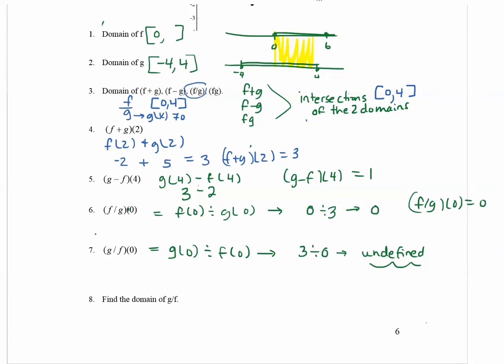Okay, now let's find the domain of g divided by f. So first, remember that the intersection of the two domains for f and g was the interval 0 to 4.